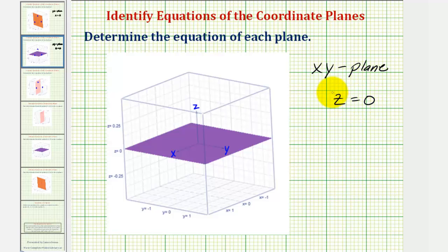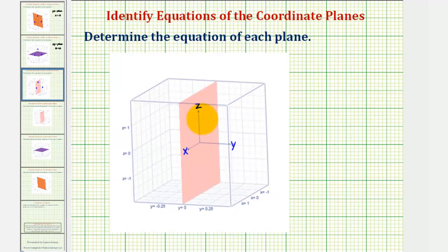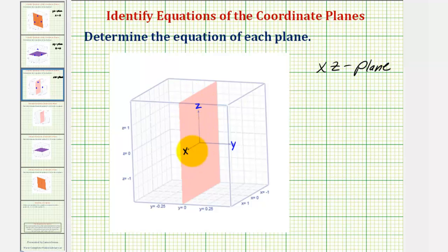And for our last example, notice how this plane contains the x and z axes, and therefore we call this the xz-plane. Notice how for any point on this plane, the x and z coordinates can be any real number, but notice how the y coordinate must be zero, and therefore the equation of the xz-plane is y equals zero.